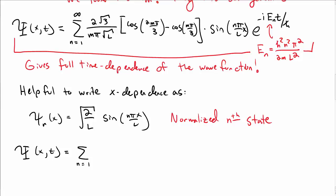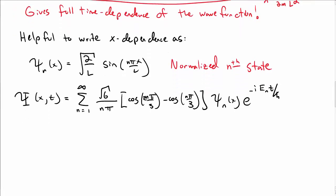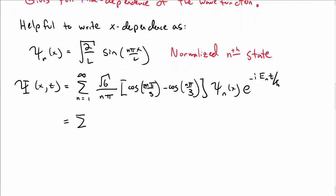That means that capital psi can then be written as the sum, n equal 1 to infinity, of square root of 6 over n pi, cosine of 2 n pi over 3 minus cosine of n pi over 3, psi sub n, e to the minus i e sub n t over h bar. It simplifies things a little bit, but in particular, let me just write this as the sum c sub n times psi sub n times the exponential.